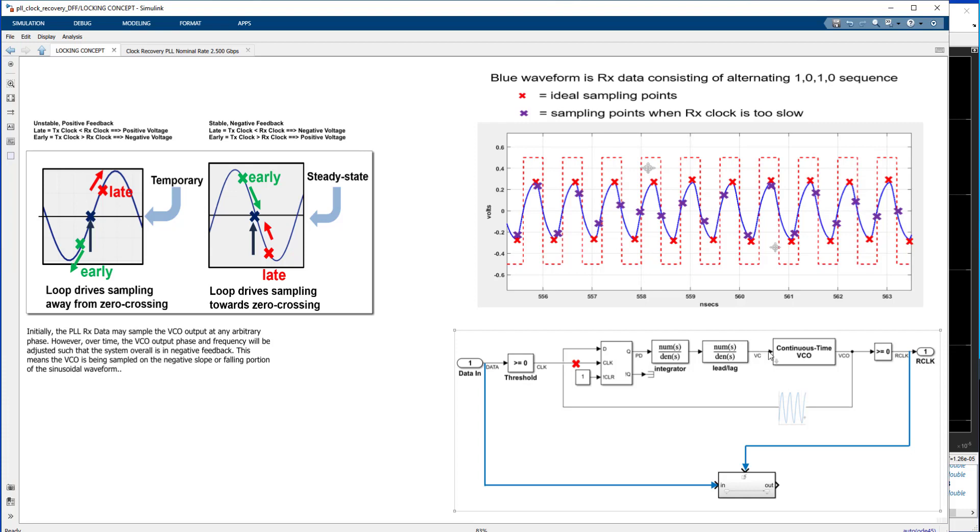That's going to serve as our correction voltage to the VCO. It's going to speed it up or slow it down, depending on which way we need to go to better align with the transmitted data rate. We're just going to continue to do that until we start to sample the received data waveform near the zero crossings on average. It'll never be precisely on that zero crossing, but we want to hone in more or less balanced around just slightly around that zero crossing location.